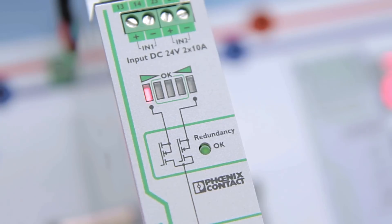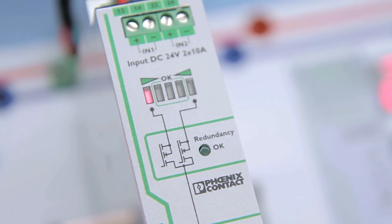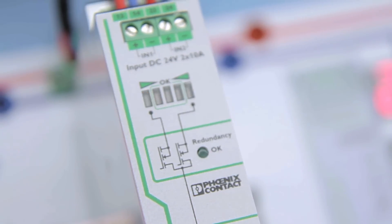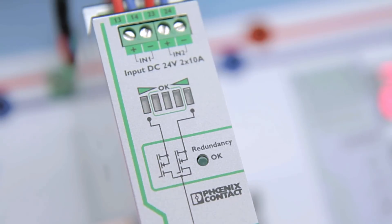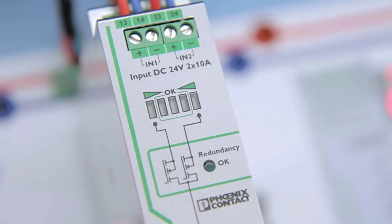Normally, if the load starts drawing more current than one power supply can provide, the redundancy would be defeated. But O-Ring avoids that problem. When the load draws more current than a single supply can provide, a redundancy OK alarm is sent to the control system, and the redundancy OK LED will blink.